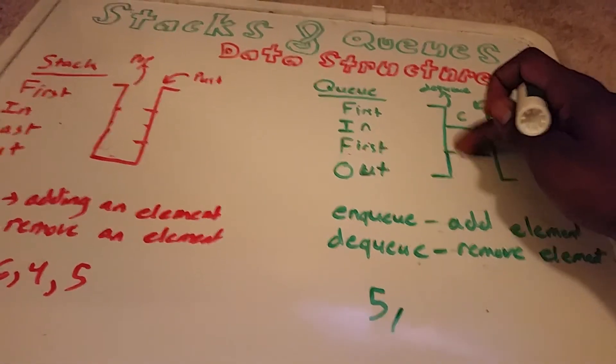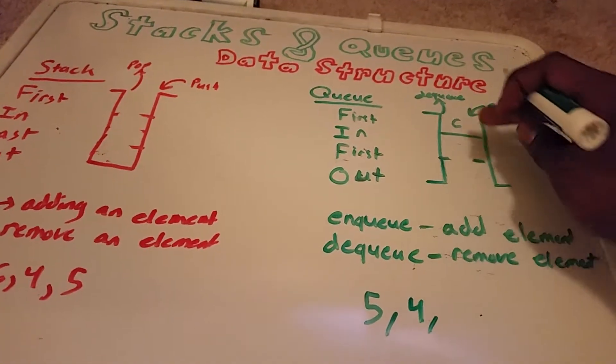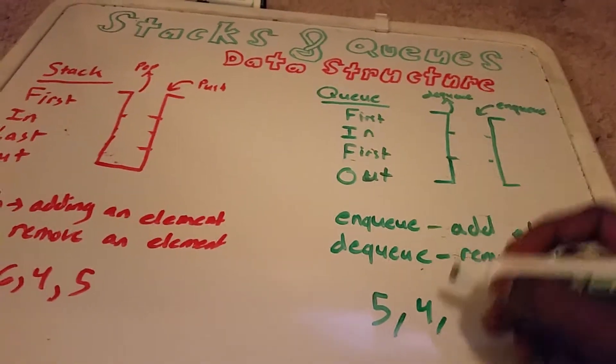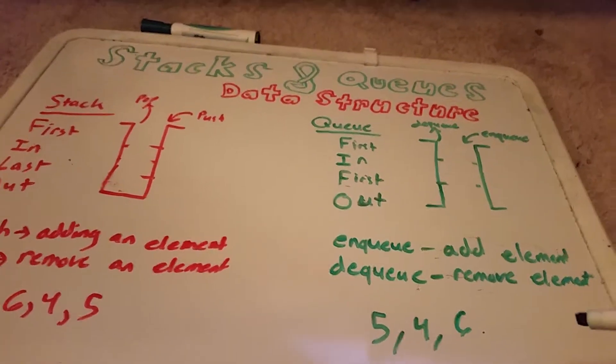And then let's say I dequeue again, so now we get 4. And I dequeue again, I get 6. And then our queue is empty.